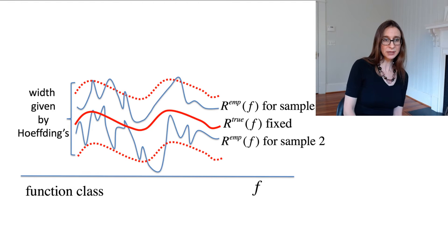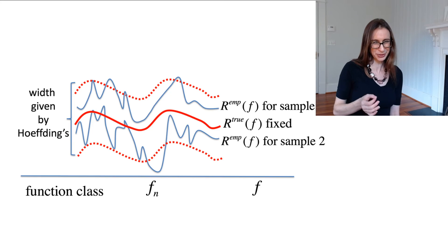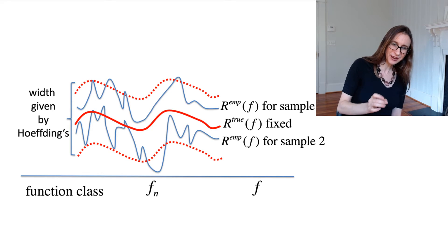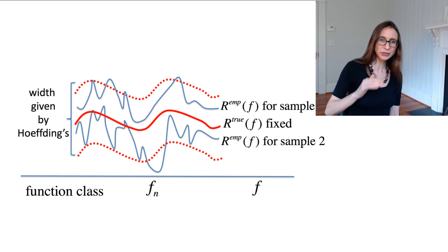However, there are a few times where the empirical risk and true risk are very different from each other. And again, this only happens with probability delta, but which function am I going to choose when I minimize the empirical risk? Well, it's exactly that one. It's exactly the point where the overfitting occurred. And you should expect this to happen fairly often because the extreme values of the empirical risk are exactly where the empirical risk is minimized. And that's exactly where you are most in danger of overfitting. That's where the empirical risk is really low. And so that's bad. That's where the problem is.